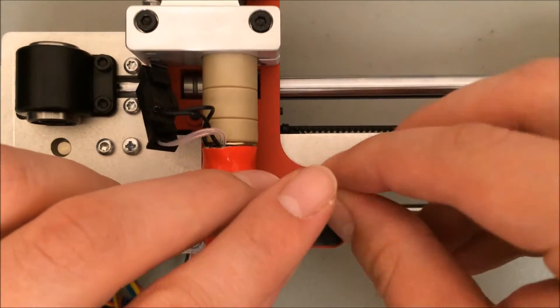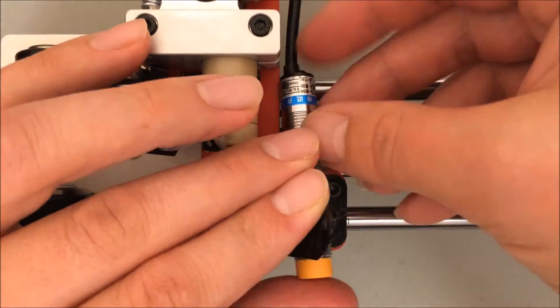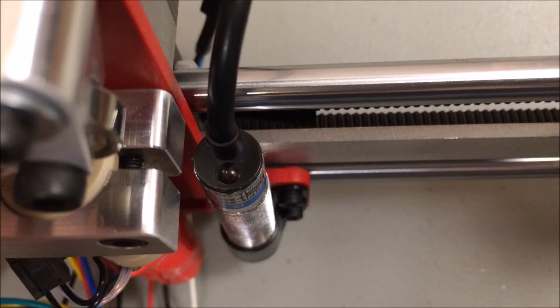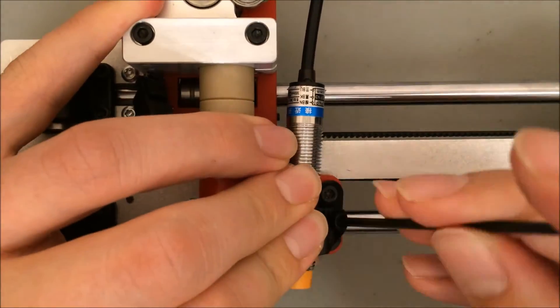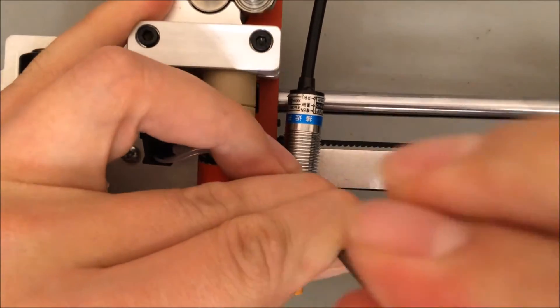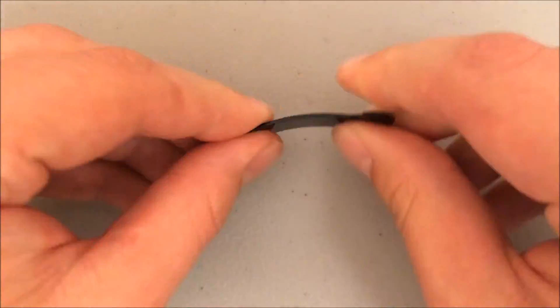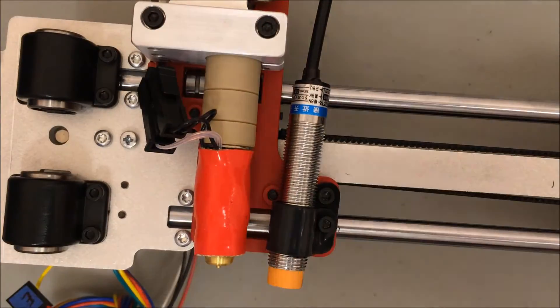Put an M3 six millimeter screw in the first hole. Place the probe over top. You want the wire of the probe towards the back. Wrap the piece around the probe and attach the second M3 six millimeter screw in the last hole. This step is very difficult and if you didn't flex the piece enough, it won't work. So you may have to detach everything and flex the piece some more.